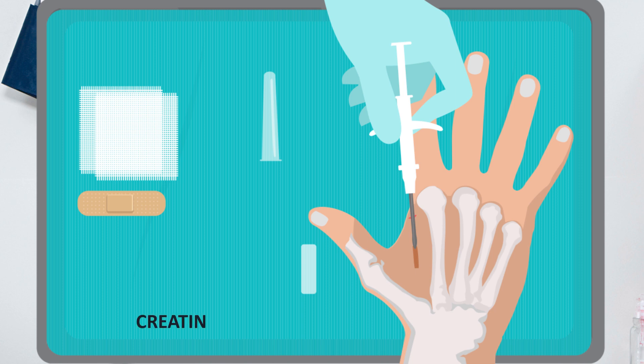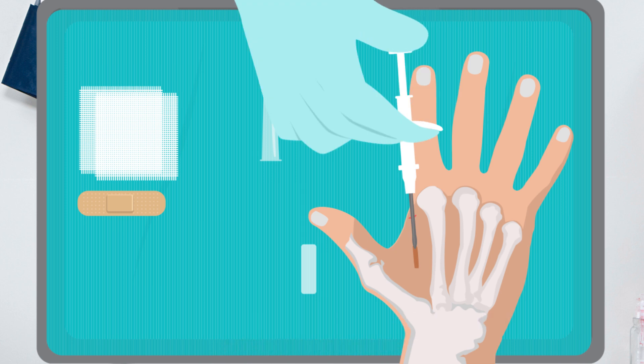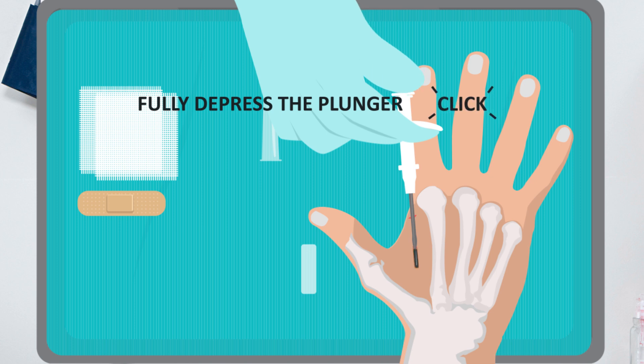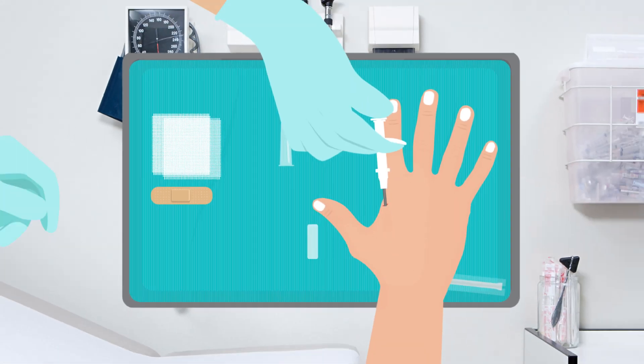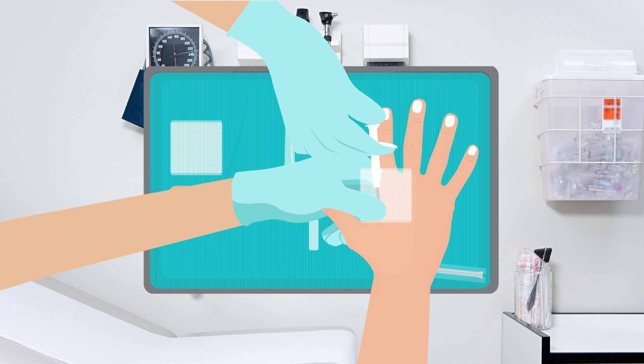This creates a pocket for the transponder to occupy when ejected from the needle. Deposit the transponder into the pocket by fully depressing the plunger. You will feel and hear a click when fully depressed. Place sterile gauze over the injection site, apply slight pressure, and remove the needle.